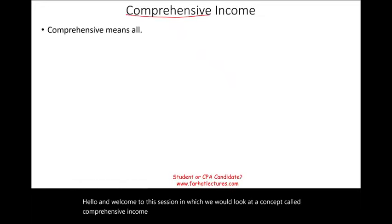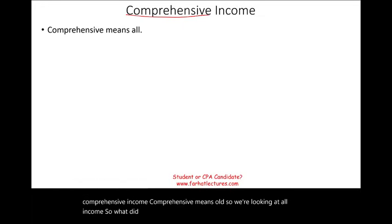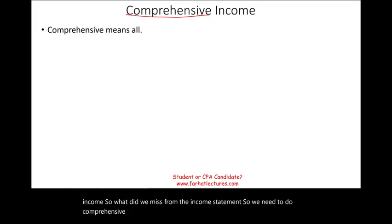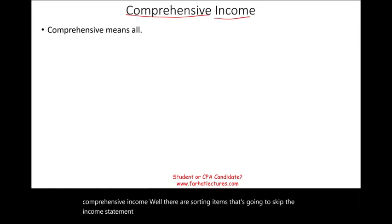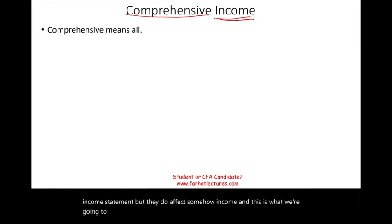Comprehensive means all. So we're looking at all income — what did we miss from the income statement? We need to do comprehensive income. There are certain items that are going to skip the income statement, but they do affect income somehow. And this is what we're going to account for: comprehensive income.